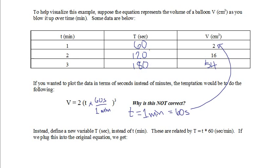And so what we have to do is make our equation work for this new variable. Now this new variable big T is related to the little variable, the variable little t by big T equals little t times 60 seconds per minute. That's your conversion factor.